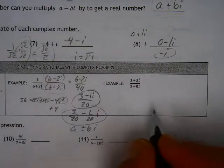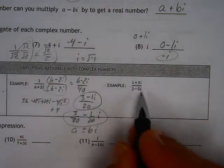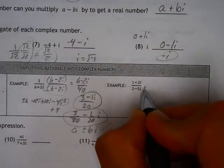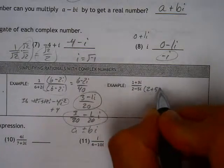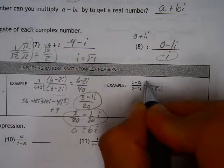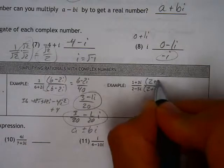The other example, done the same way, you're going to still multiply by 2 plus 5i, which is the conjugate of the denominator, but you need to do that to the top.